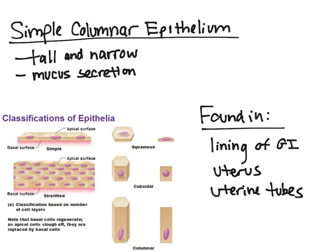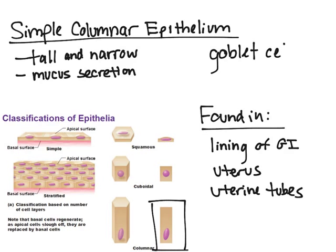Simple columnar epithelium consists of one layer of really tall, narrow, essentially rectangular cells. They may possess goblet cells, which help with mucus secretion. Simple columnar epithelium generally secretes mucus and absorbs things, but the key difference from simple cuboidal is that simple columnar does more absorption than secretion. It can be found in the lining of the GI tract, the uterus, and the uterine tubes.